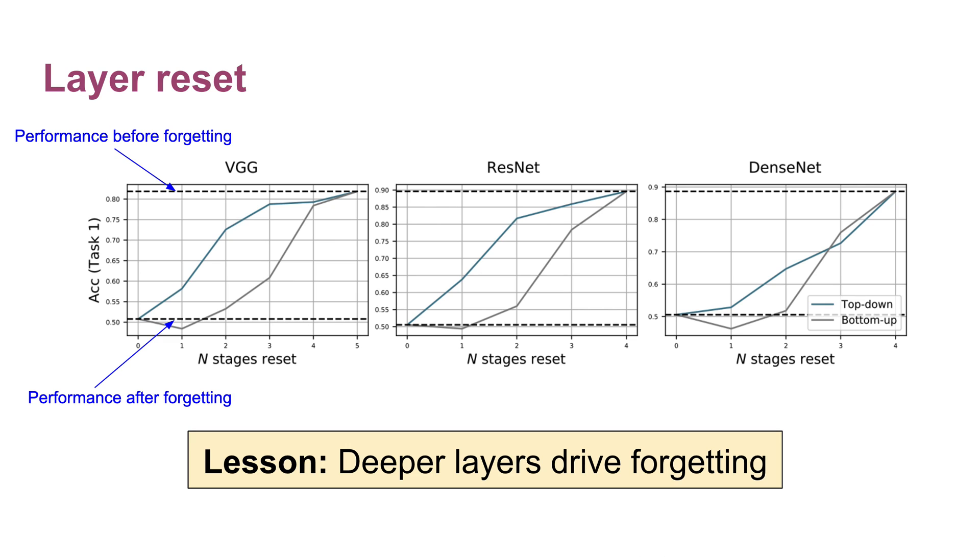Depending on how many layers we reset, we can go from the performance after forgetting to recovering the full performance before forgetting. But the way that we can see that it's primarily the deeper layers which drive forgetting is to look at resetting layers in two different orders.